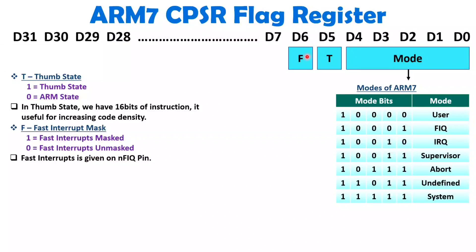The next bit, D6, is the F bit, which controls fast interrupt behavior. If you want to mask fast interrupts, you set this bit to 1. So this F bit is used to mask fast interrupts. If F equals 1, fast interrupts are masked; if F equals 0, fast interrupts are unmasked.